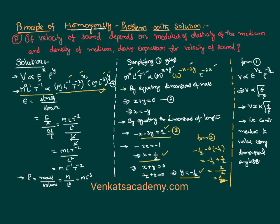By solving this problem we have learned the concept of principle of homogeneity — that the powers of the fundamental quantities in any correct physics equation must be the same on both the left-hand side and right-hand side. We have also learned one limitation: we cannot find the value of a proportionality constant using dimensional analysis. Thank you; subscribe to this YouTube channel for more information.